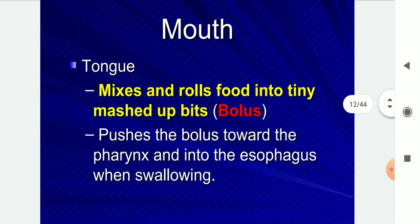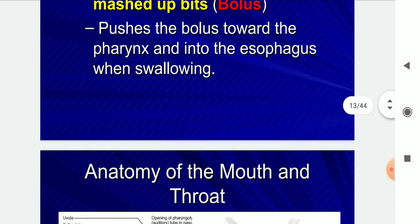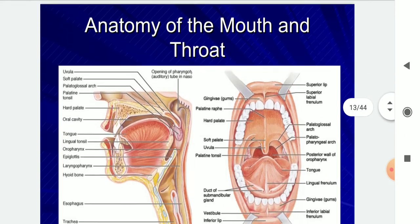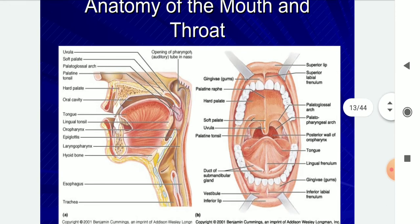The tongue mixes and rolls food into tiny mashed bits, then pushes the bolus towards the pharynx and into the oesophagus when swallowing. The anatomy of the mouth parts and throat is shown in the image — a picture of the mouth and throat.